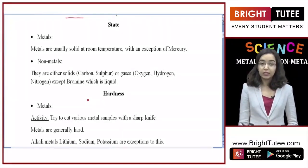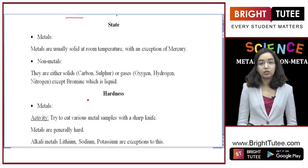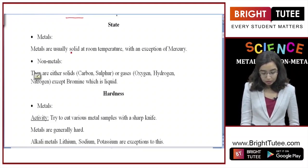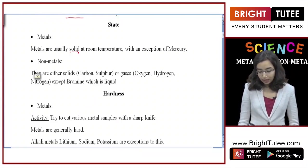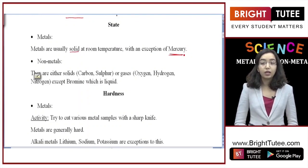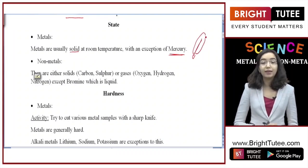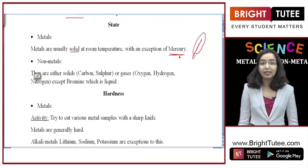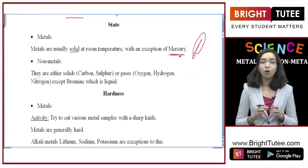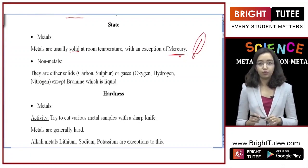The next property is the state of the element — does it exist in solid, liquid, or gaseous form. Metals are usually solid at room temperature, with an exception of mercury. Mercury, as you have seen in thermometers, is liquid. Inside a mercury thermometer there is a tube in which mercury rises or falls to show temperature. So mercury is liquid and that is the exception, but generally all metals are solid at room temperature.